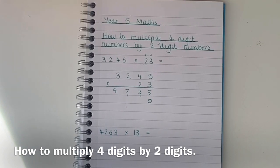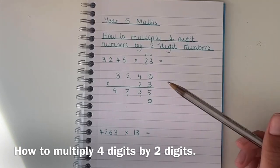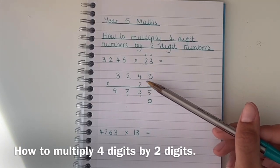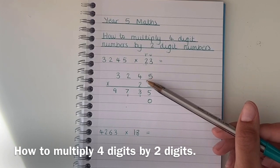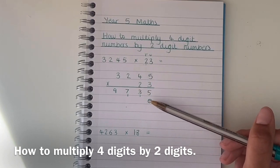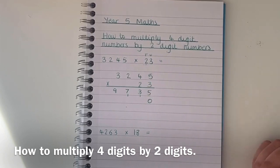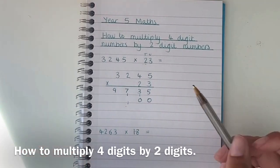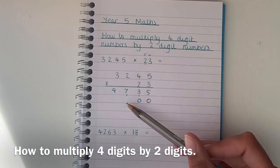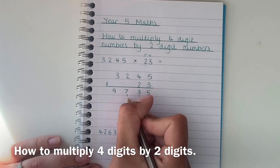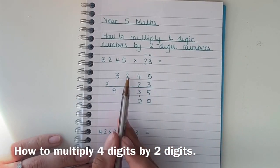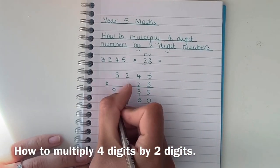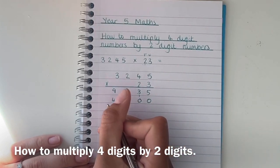So my next step now is to do the same number, 3245, but multiply it by 20 this time. So I'm going to start with 2 times 5, which would be 20 times 5, but because we put our zero down we can do 2 times 5 which is 10. So put my zero down and carry the 1 over. 2 times 4 is 8. Remember to add that which would be 9. And 2 times 2 is 4. And then 2 times 3 is 6.